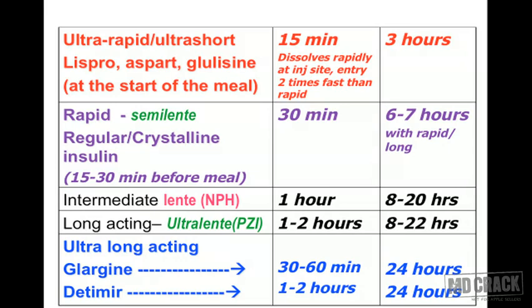Because ultra-rapid insulins begin acting in 10 to 15 minutes, they are ideally given just before a meal to control postprandial hyperglycemia — the rise in blood sugar following eating. If the patient injects just as the meal begins, the insulin starts acting as blood sugar rises from the ingested food, giving excellent postprandial glucose control. These insulins dissolve very rapidly at the injection site and enter circulation twice as fast as regular rapid-acting insulins.